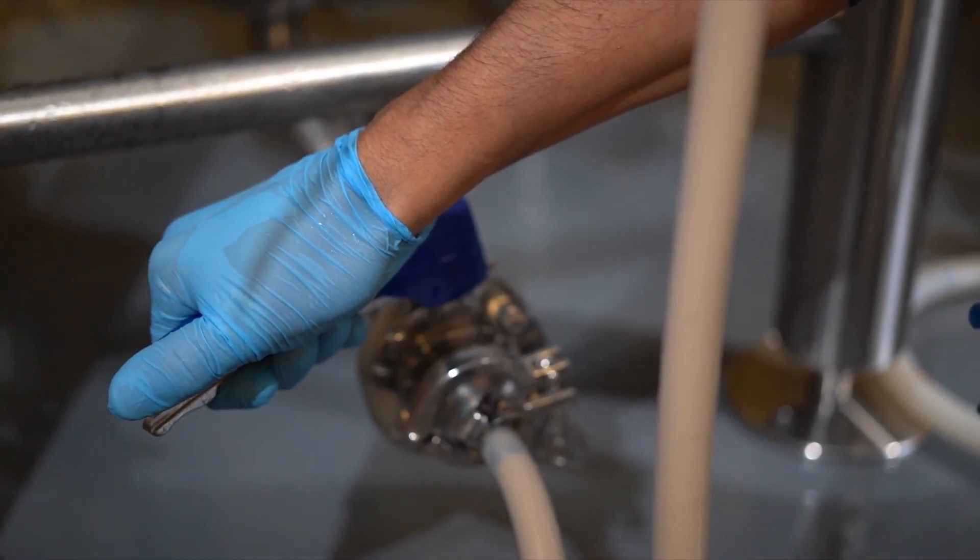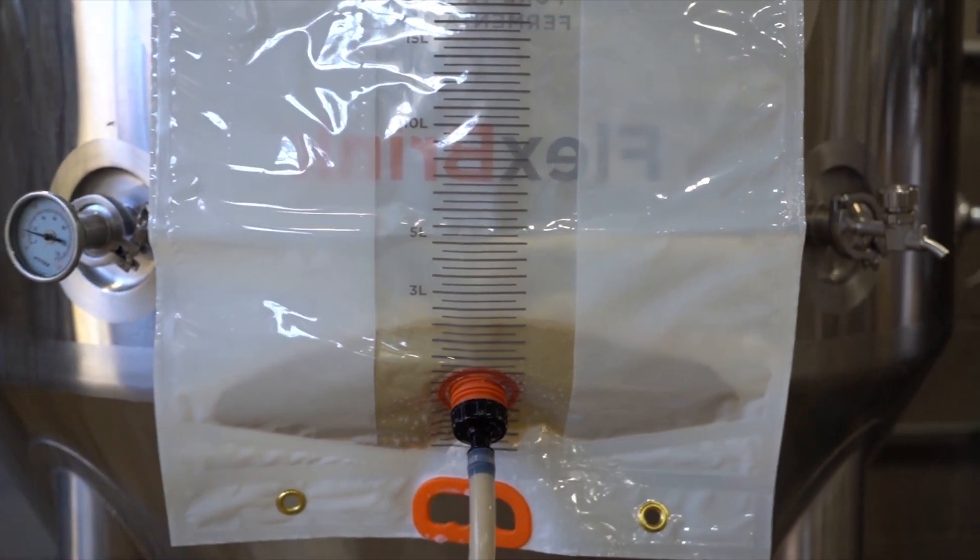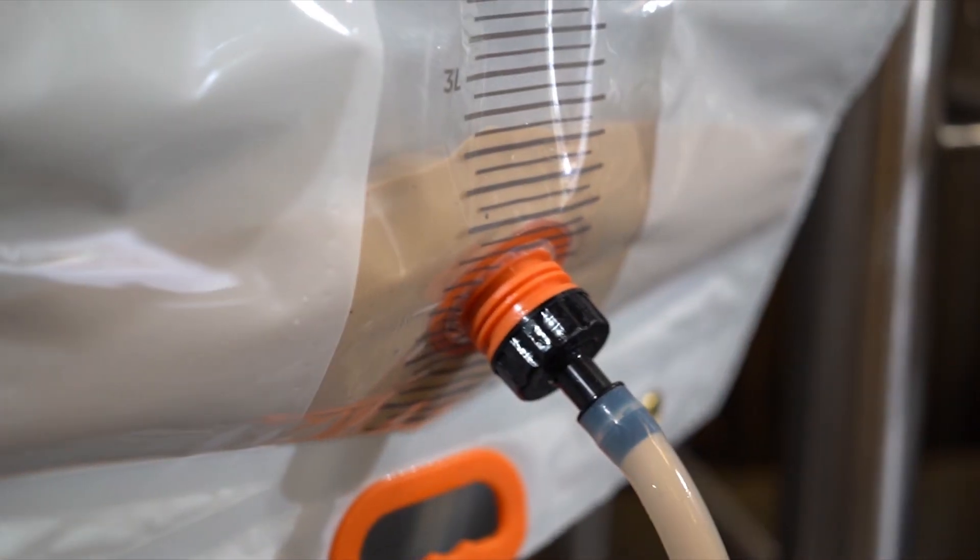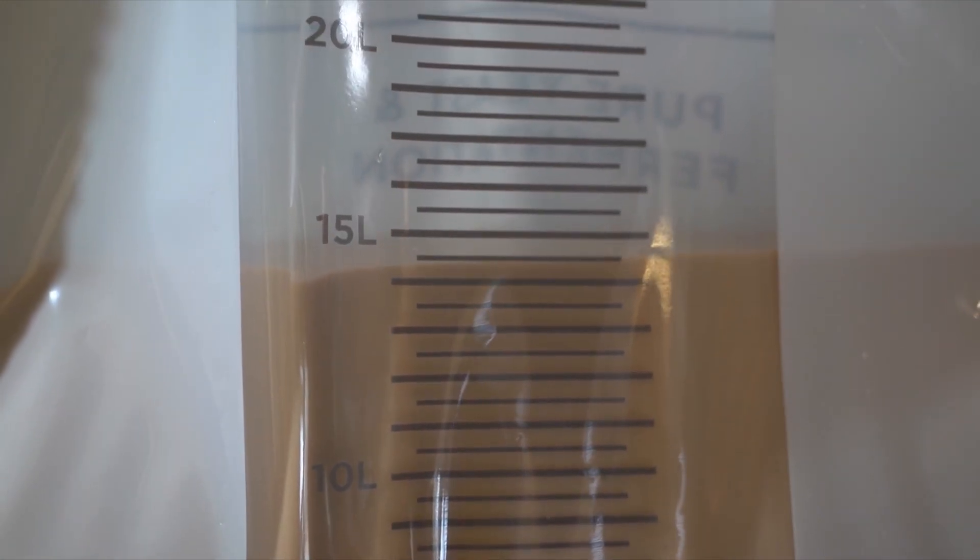Be sure to monitor harvest speed in order to avoid potential tunneling of the yeast in the conical fermenter. Harvest yeast until the entire slurry is collected or the volume in the Flexbrink reaches 20 liters.